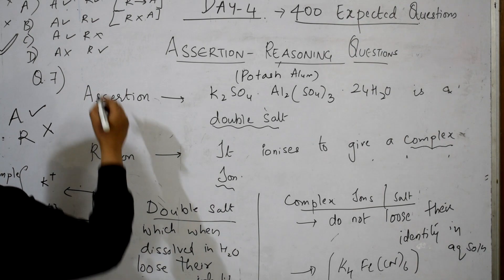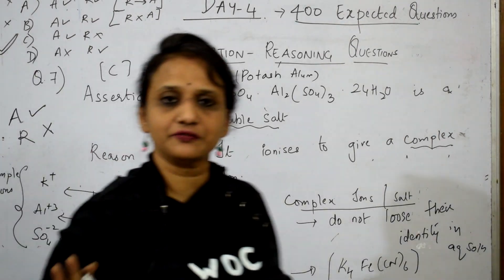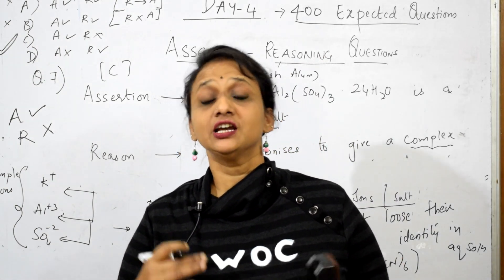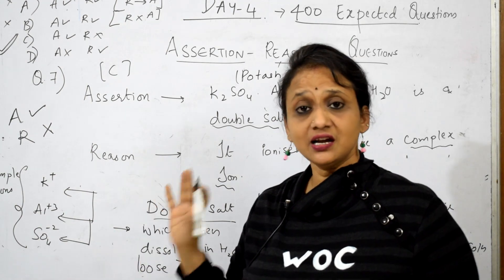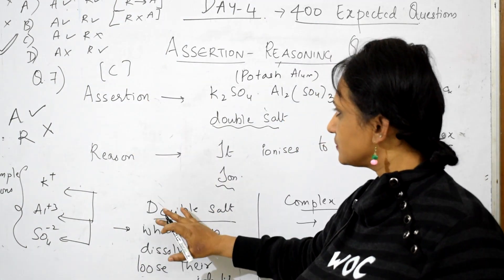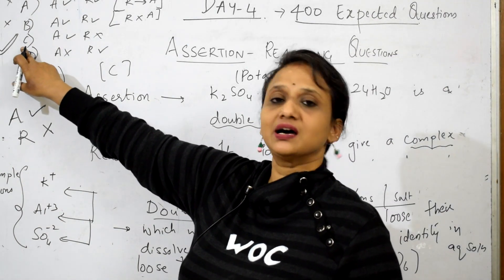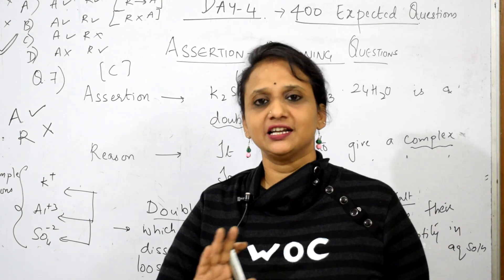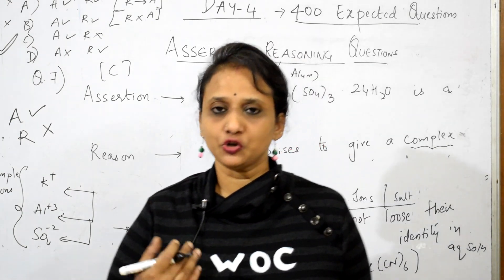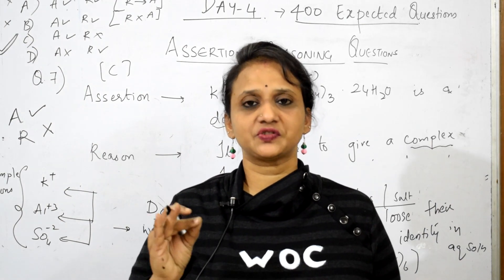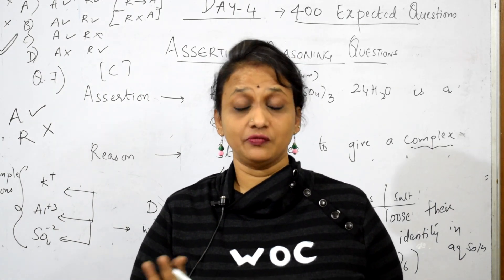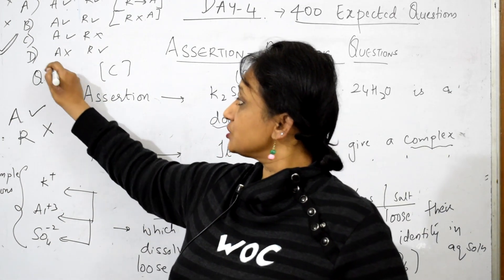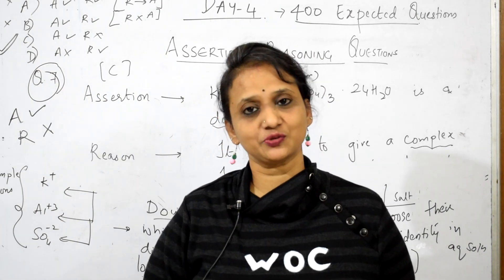So you will mark option C. No confusion — everywhere it is concept. If you understand the concept, assertion and reasoning is easy. So today you have seen how to analyze: read the question, analyze like this, go and mark it. I will be doing a lot of questions in these 200 questions. You have to check statement 1 (assertion), statement 2 (reason), and whether reason is supporting assertion or not. Now let us come and see question number 8.